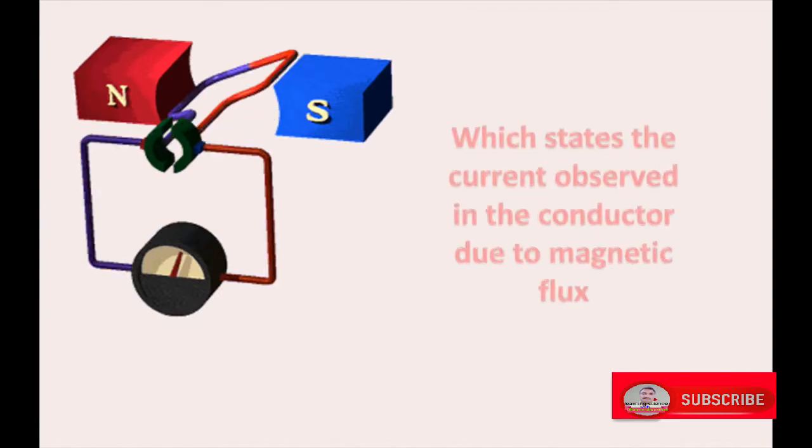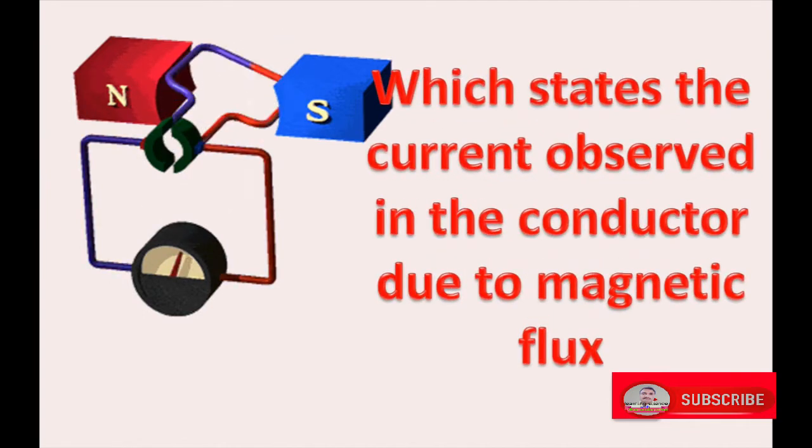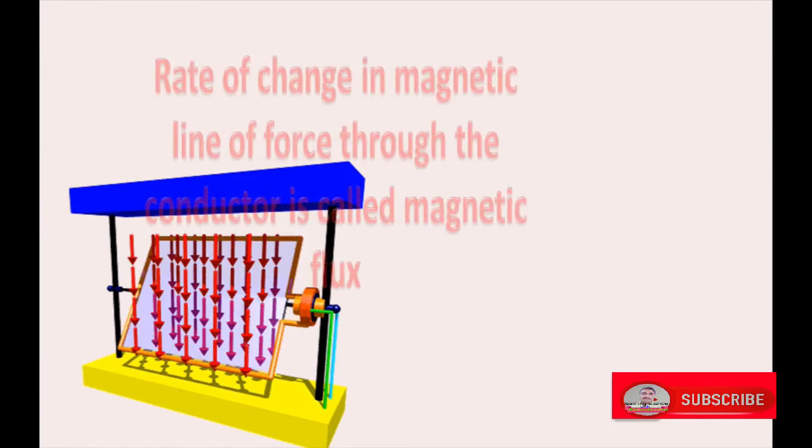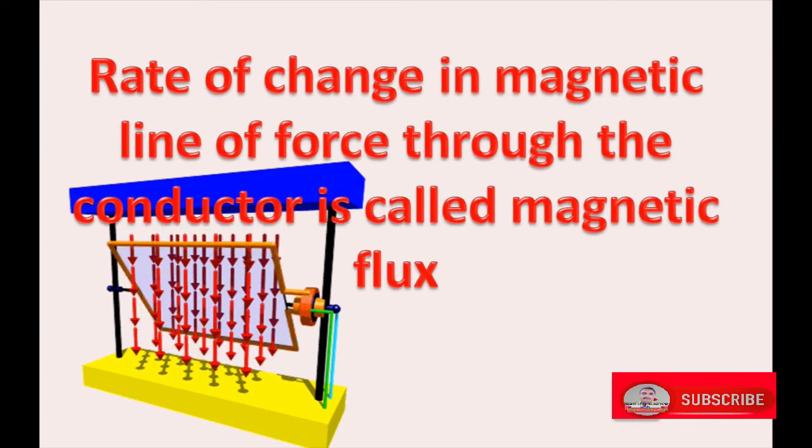Electromagnetic induction states that current is observed in the conductor due to magnetic flux or relative motion between conductor and magnet. The rate of change in magnetic line of force through the conductor is called magnetic flux.